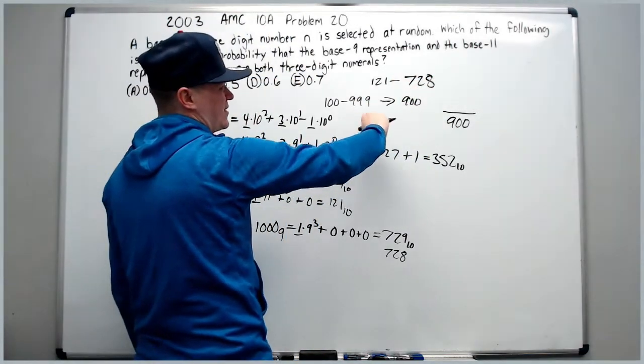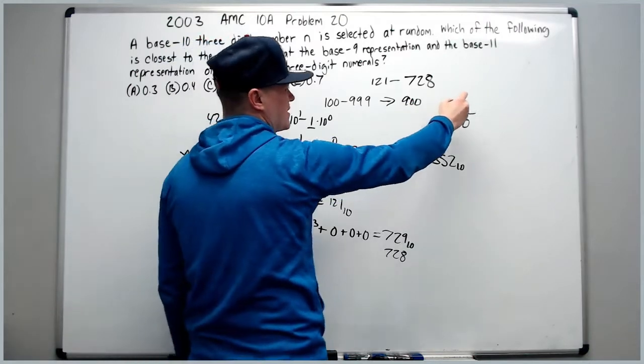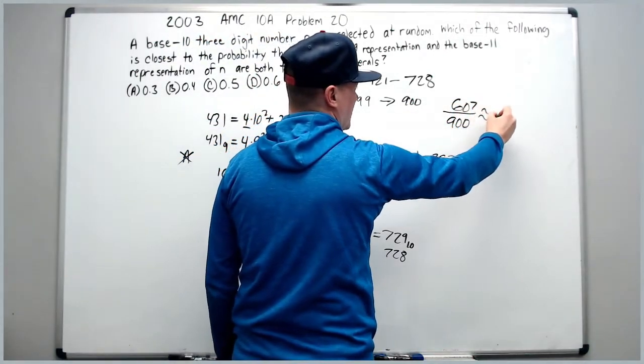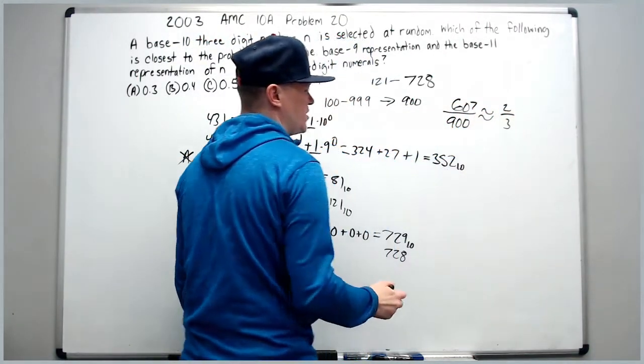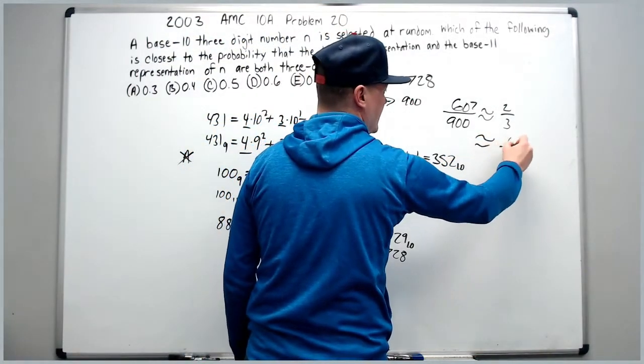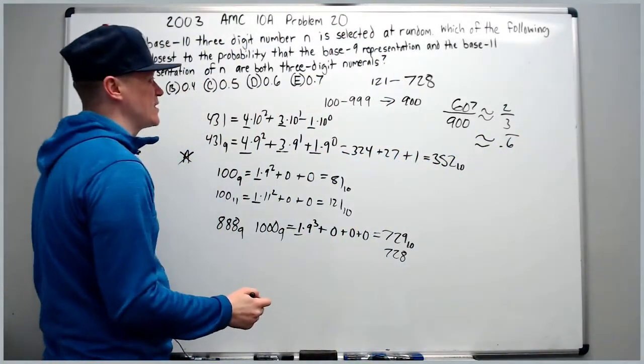So our upper bound is now 728, and we can subtract to get that it's about 607, which is approximately 2 thirds, which is again approximately 0.6 repeating, or 66%.